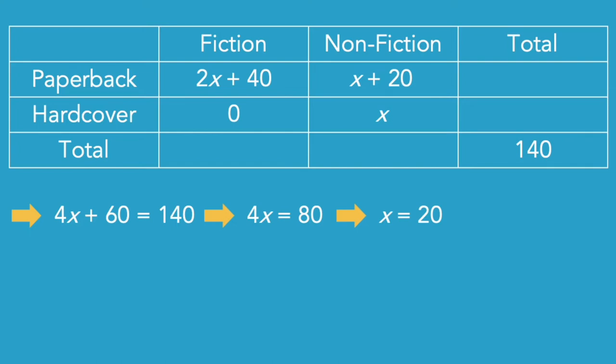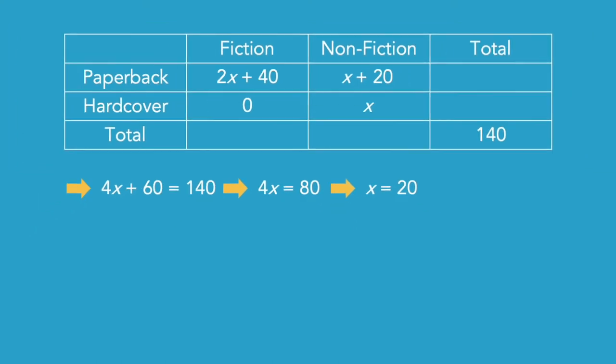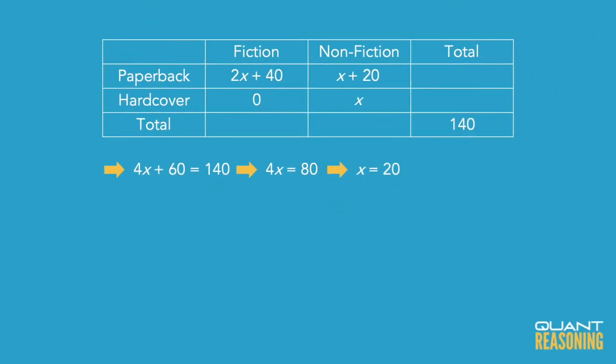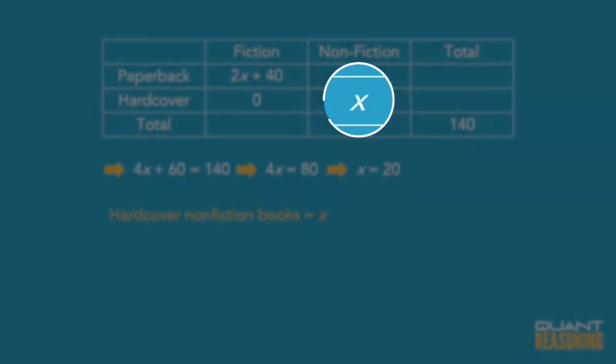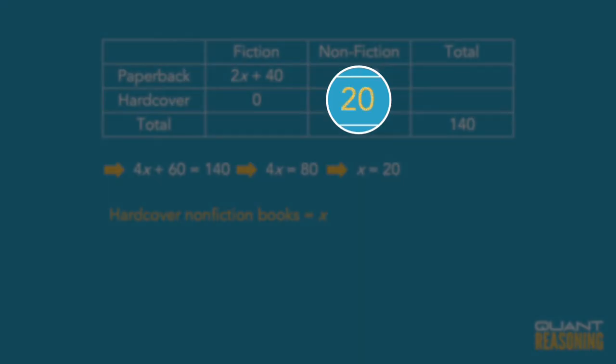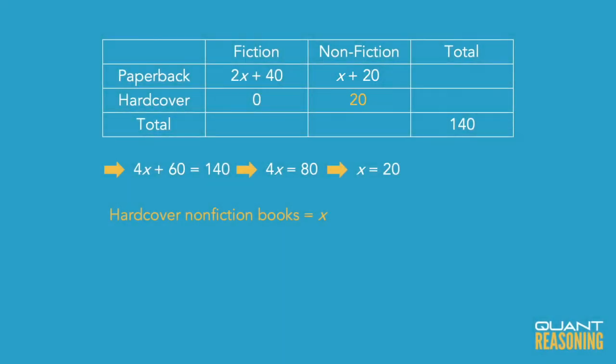Now I'm ready to finish reading the question, and it looks like they're asking for the number of nonfiction hardcover books, which I have as X, and I already know what X is. So as is so often the case, I already have the answer by the time I get to the question mark. The correct answer is, of course, 20.